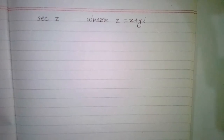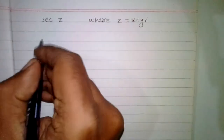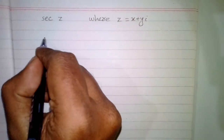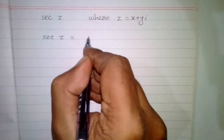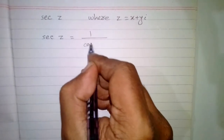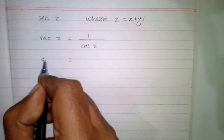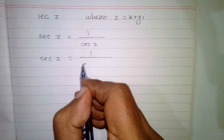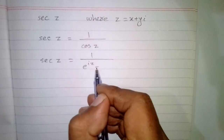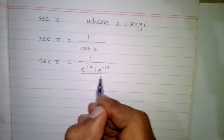In this video we will find the secant of a complex number z, where z is equal to x plus y iota. Secant of z is equal to 1 upon cosine of z, and we know that cosine of z is equal to e to the power iota z plus e to the power minus iota z, upon 2.